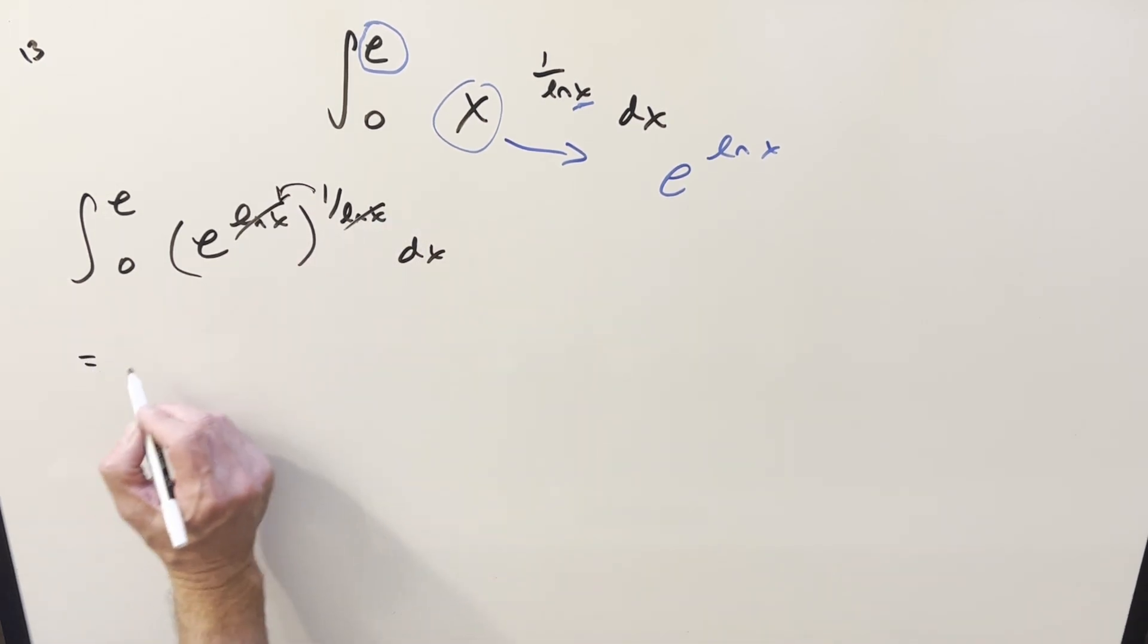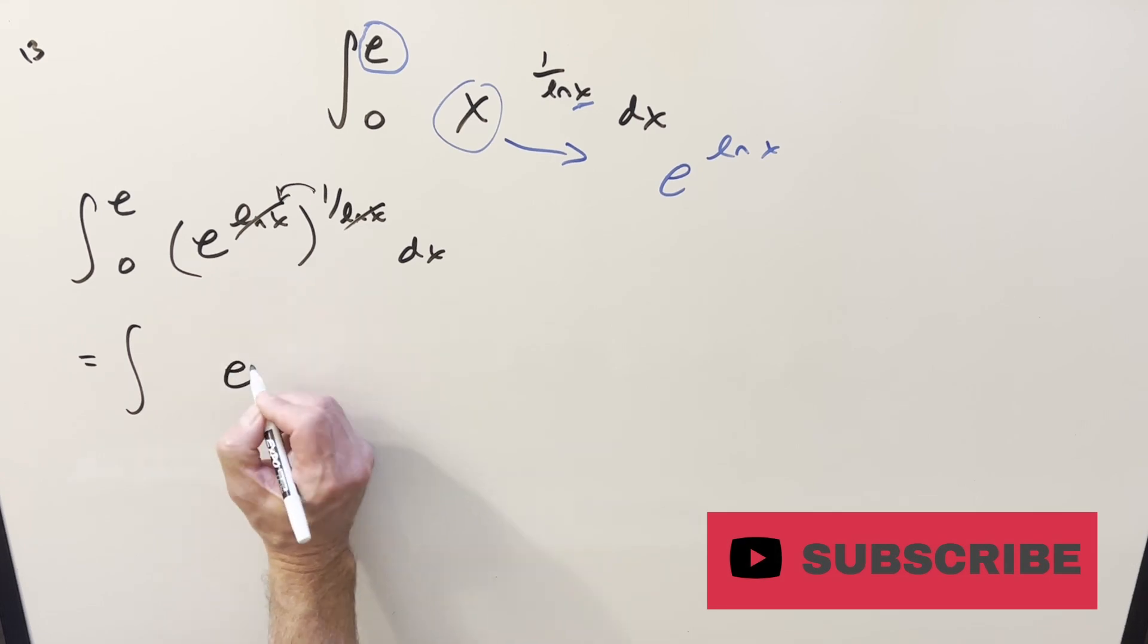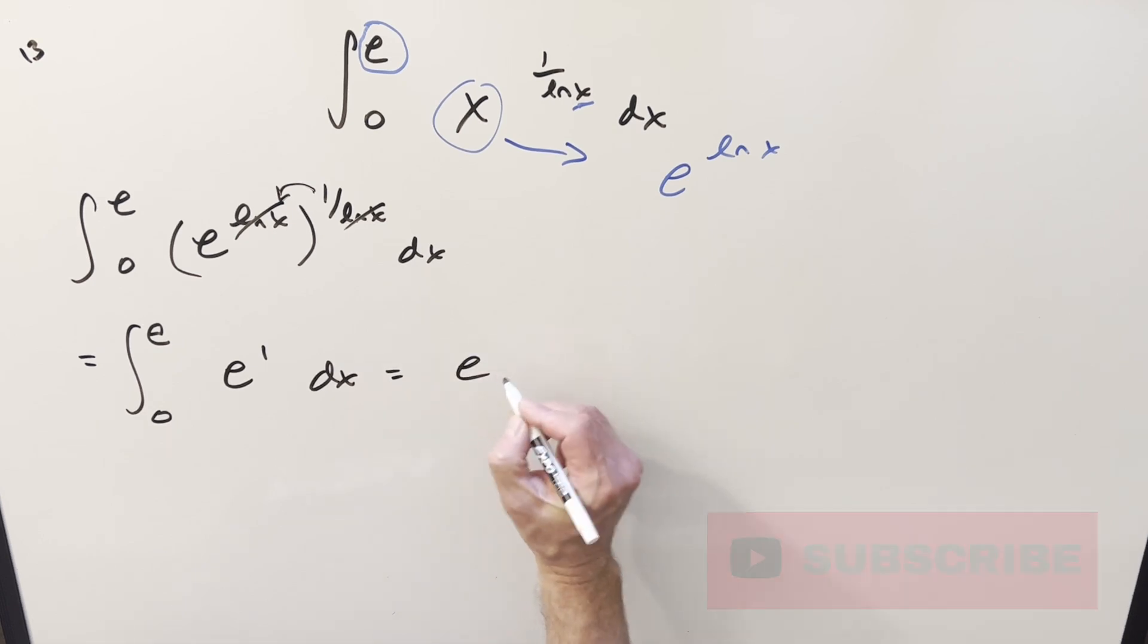And what we're left with, if I rewrite this, now this is just e to the 1. But e to the 1, that's just a constant. Integrating this is just like integrating 1. So we do this, we get e times x evaluated from 0 to E.